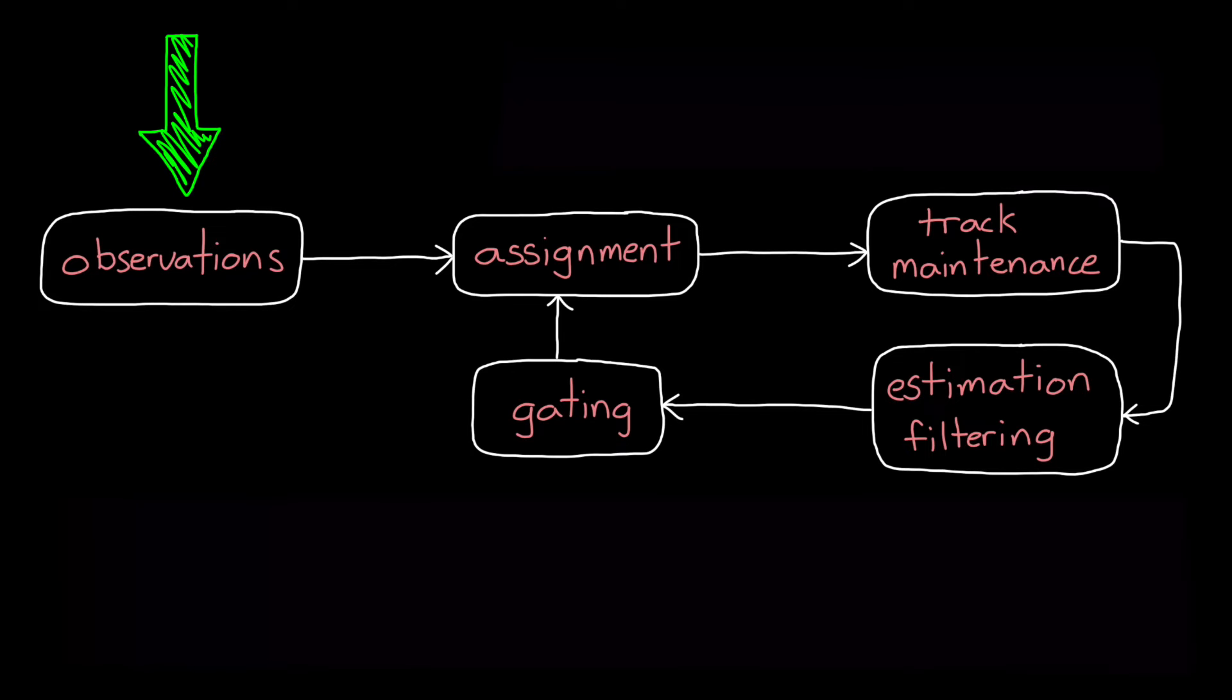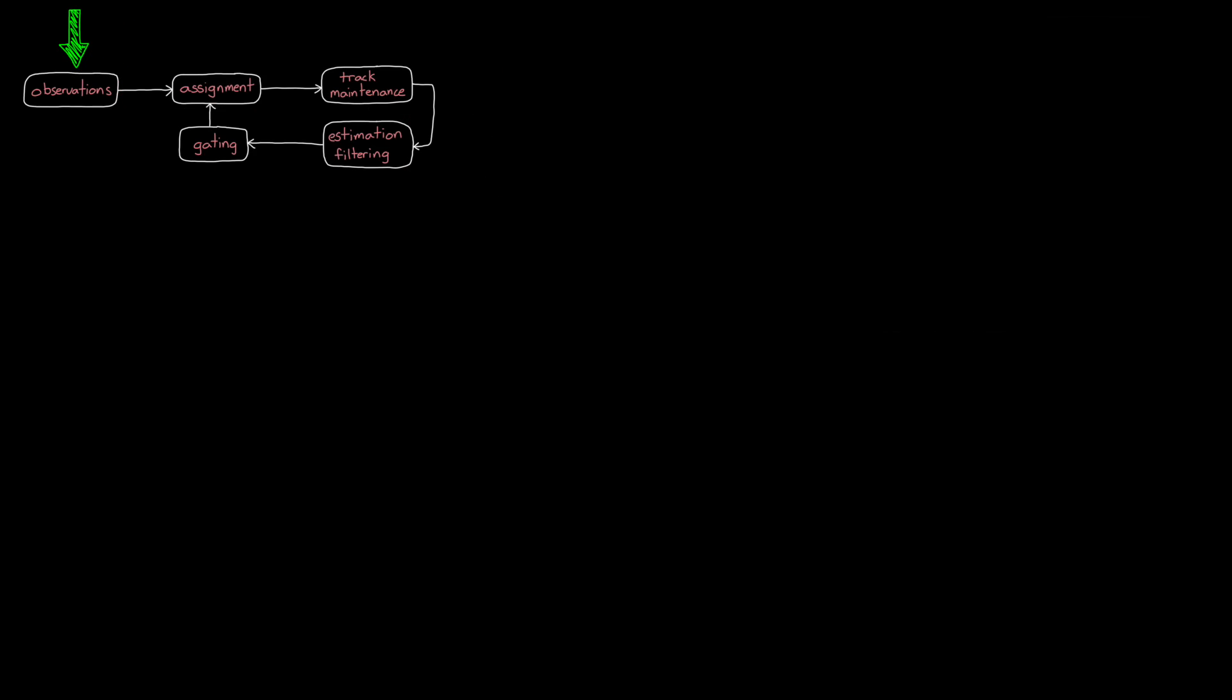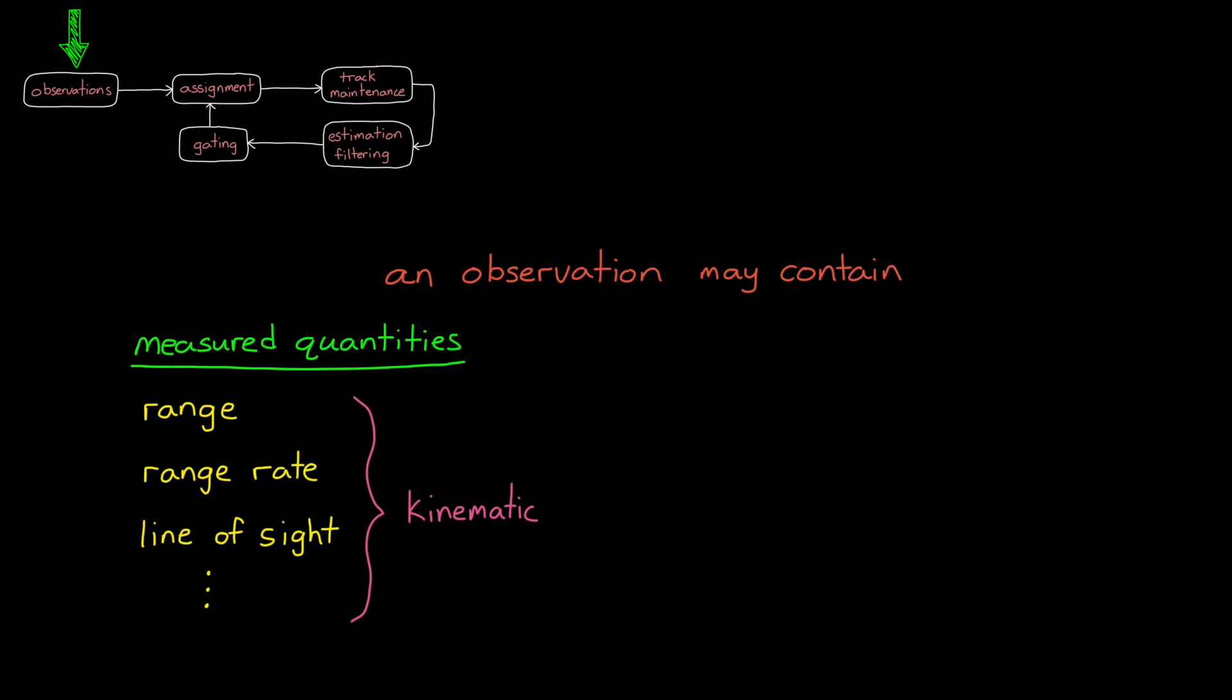And we're going to start with observations. An observation of an object may contain measured quantities like range, range rate, or line of sight. These are quantities that represent the kinematic nature of the object. But observations could also contain measured attributes like target type, ID number, and object shape.